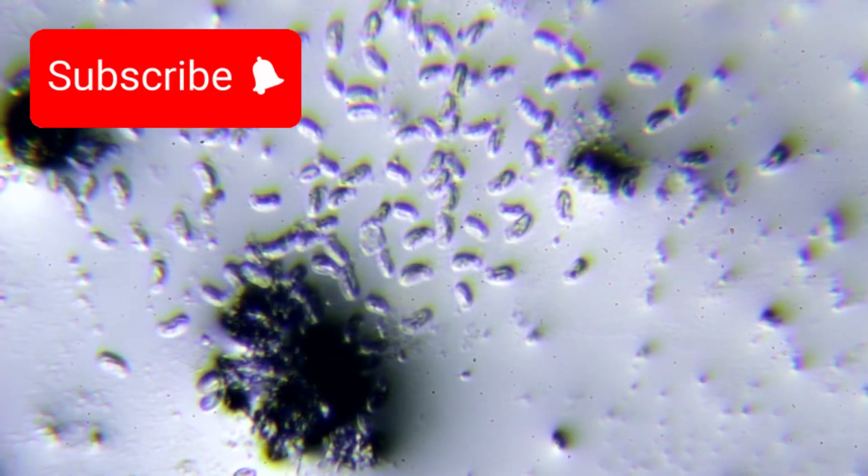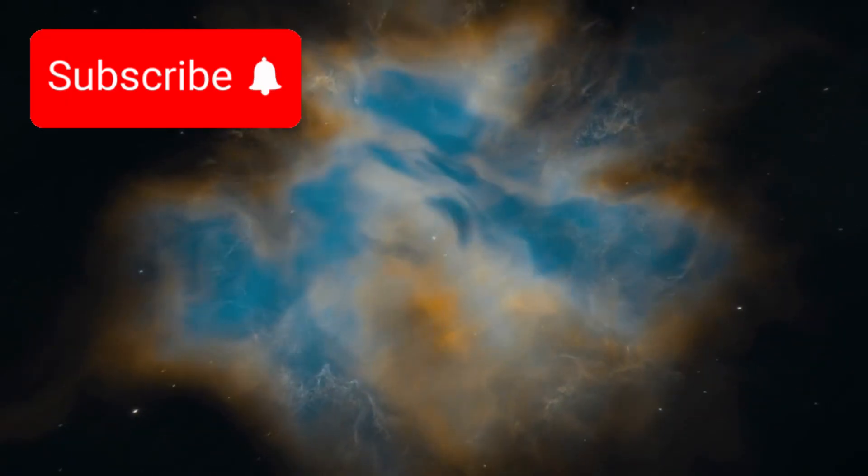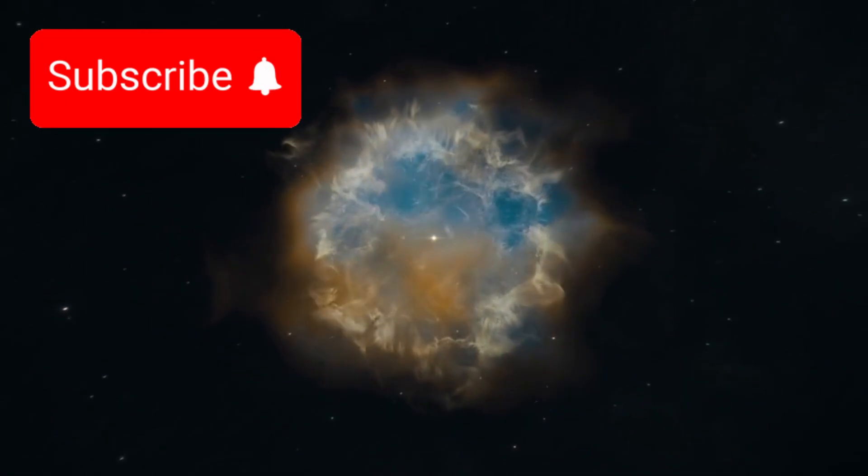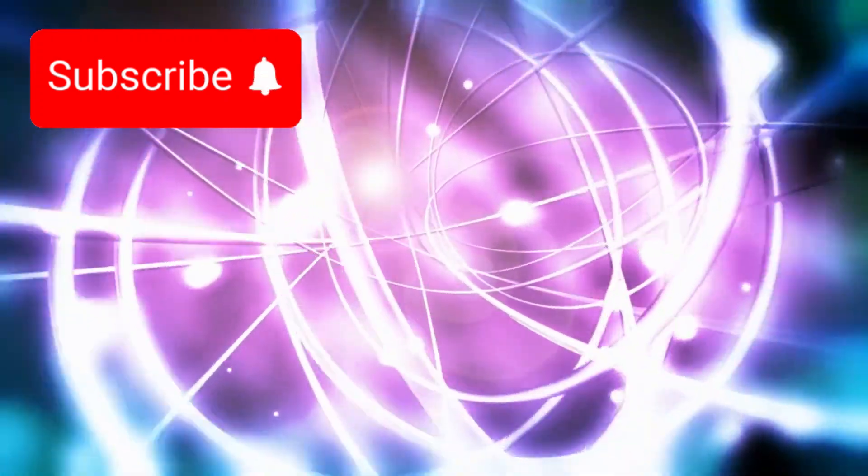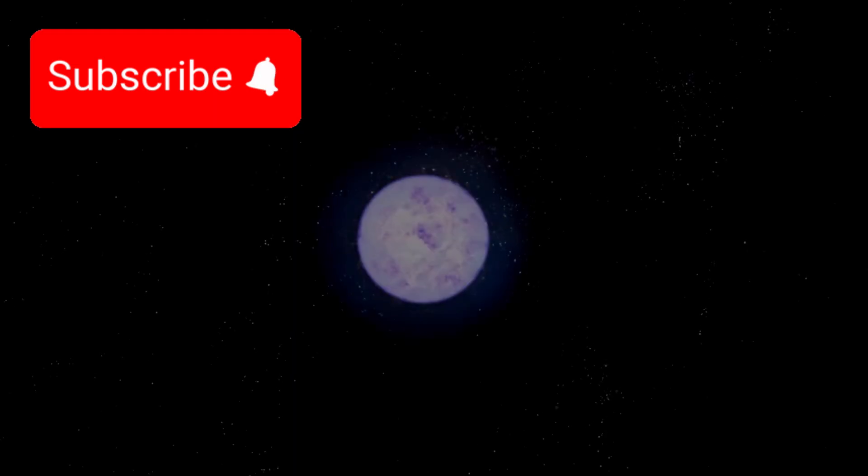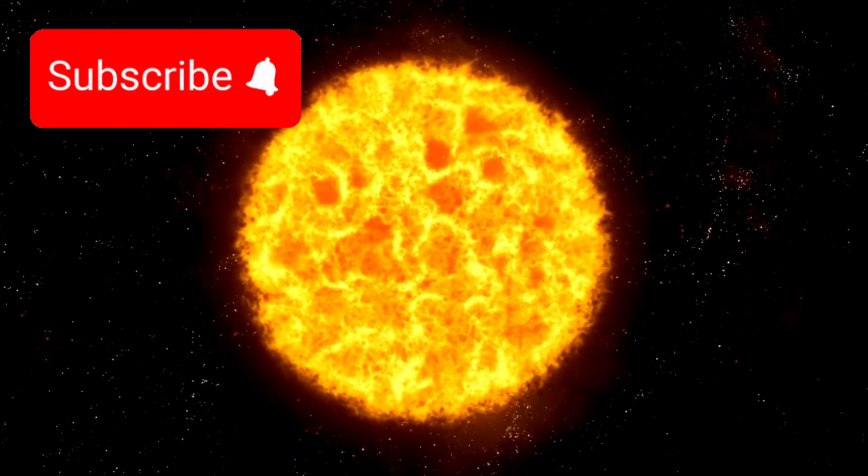This stellar giant is losing mass rapidly, shedding material into space as it nears the end of its life. Surrounding it is a vast nebula formed from its own stellar wind, hundreds of times wider than the star itself. Deep within, nuclear fusion is shifting gears. After burning hydrogen, it began fusing heavier elements like helium and carbon. Eventually, it will form an iron core, the death sentence for stars this massive.